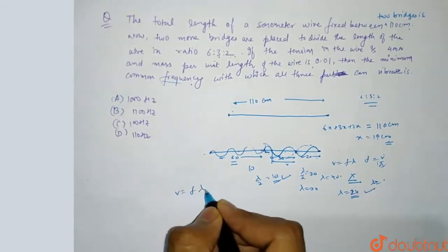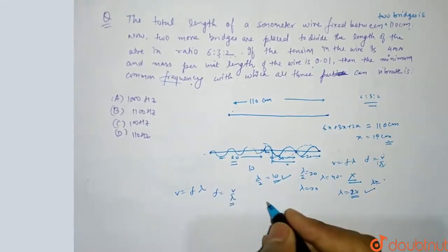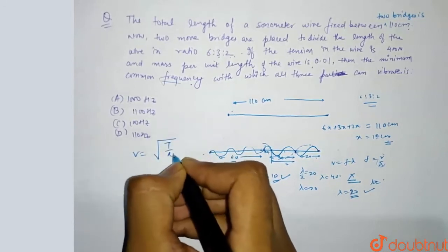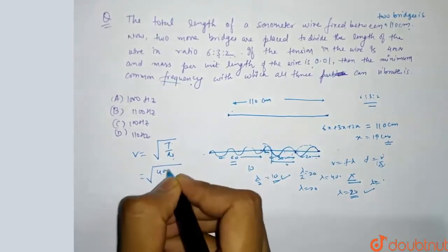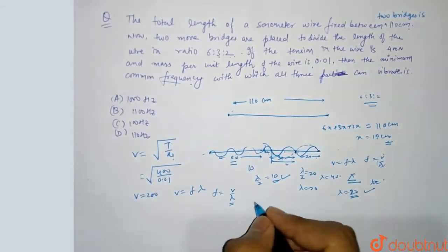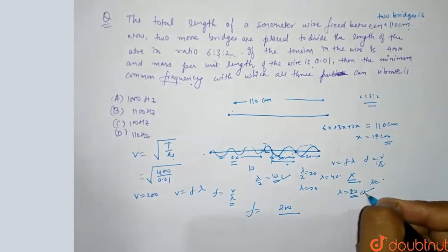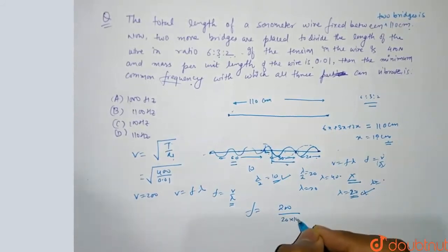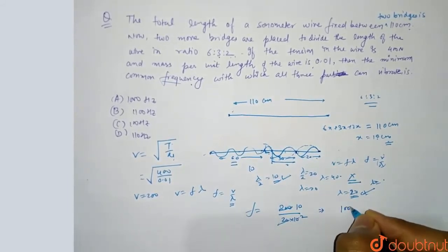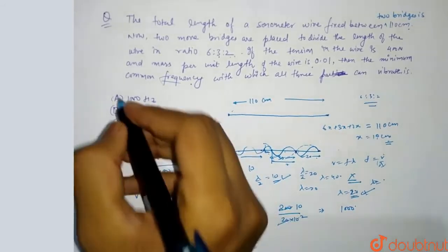V is equal to f lambda and we need f is equal to v by lambda. Velocity of wire is root T by mu. Tension is 400, mu is 0.01, so v value is 200. Frequency is 200 by lambda. Lambda is 20 cm, so 20 into 10 to the power minus 2. So 10 upon 10 to the power minus 2 is 1000. We have frequency is 1000 Hz. So this is option A.